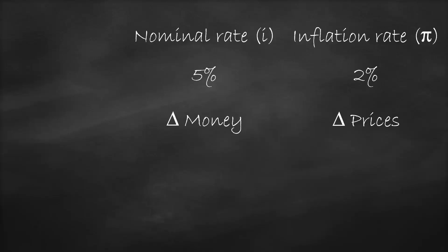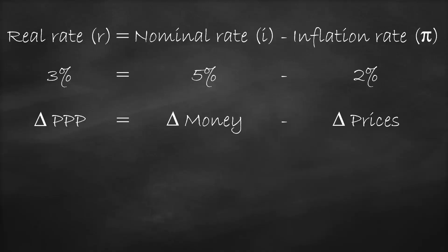The change in prices is two percent. So if we take the nominal rate minus the inflation rate, this gives us our real interest rate: five percent minus two percent equals three percent. This means that after one year, our money increases by five percent (nominal rate) while prices increase by two percent, so our real rate of three percent represents the change in purchasing power — we can buy three percent more goods and services.